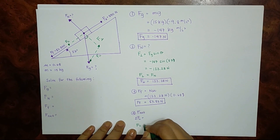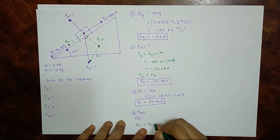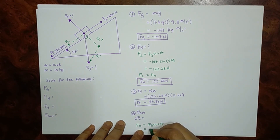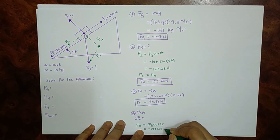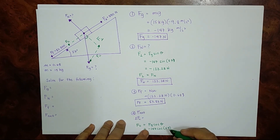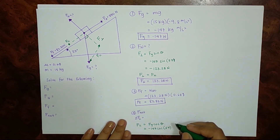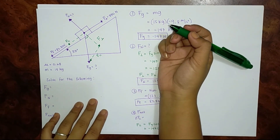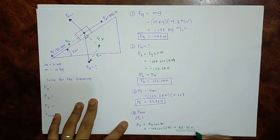F parallel equals F sub g times cosine theta. So we have negative 147 times cosine 57 degrees, which equals negative 80.06 newtons.